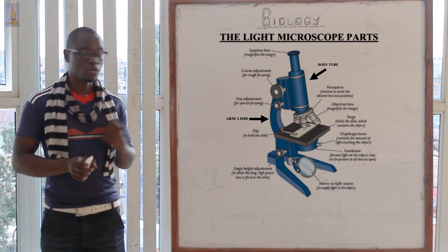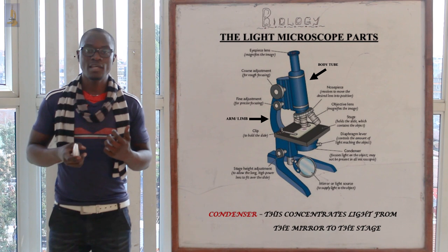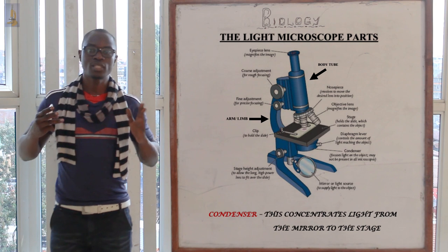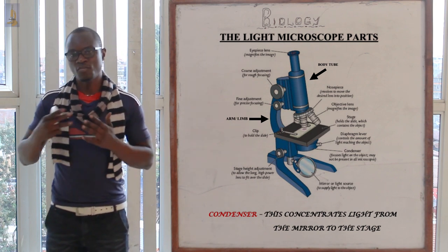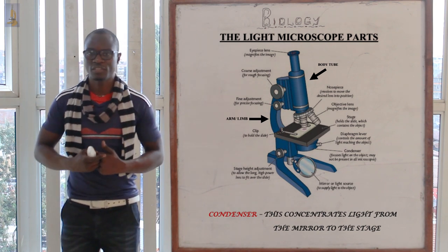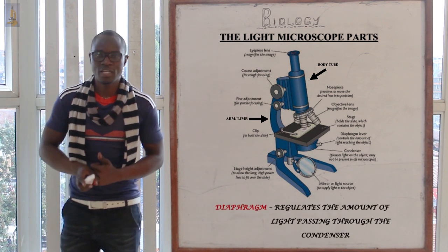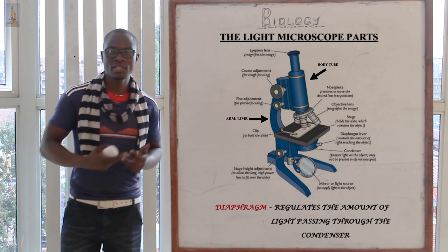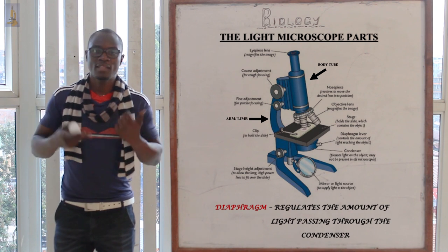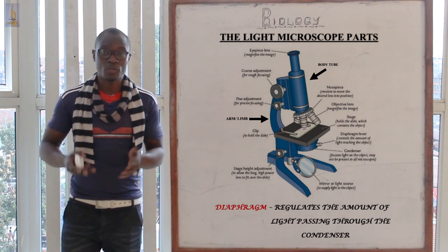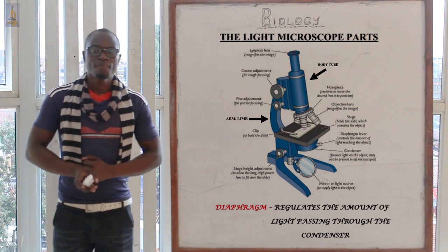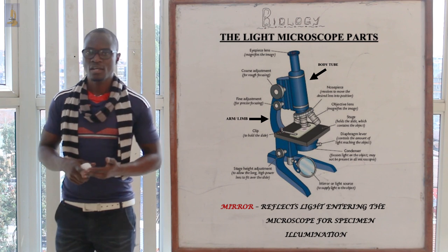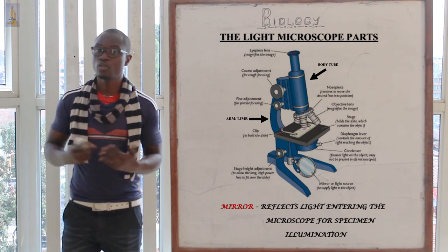The condenser is a lens located below the stage; its function is to concentrate light onto the stage from the mirror. The diaphragm regulates the amount of light passing through the condenser to the stage — in short, it regulates the amount of light entering the microscope. The mirror captures light and reflects or bounces it into the microscope.